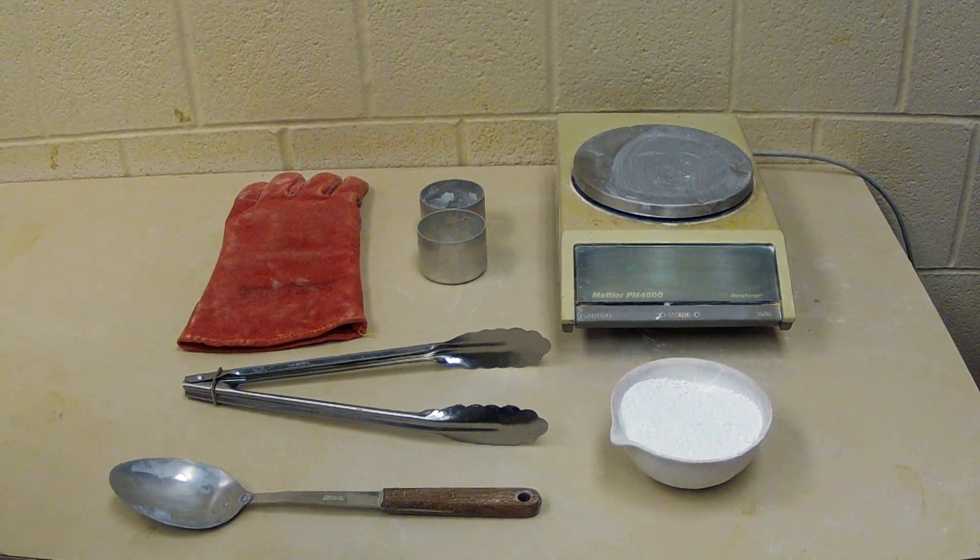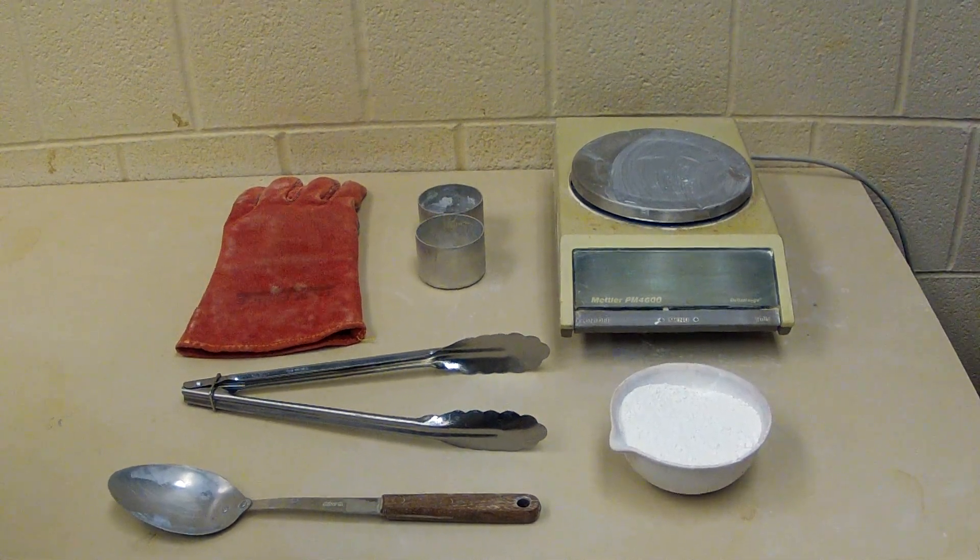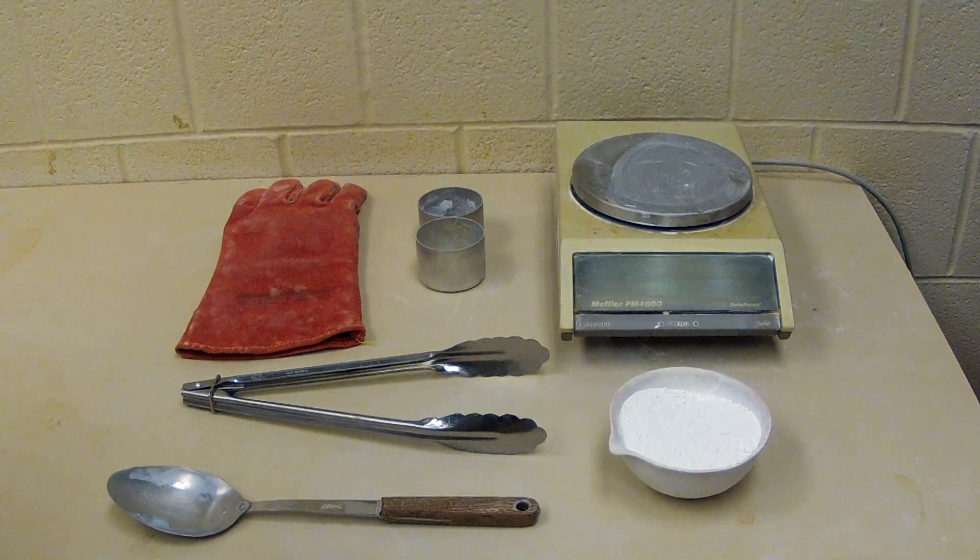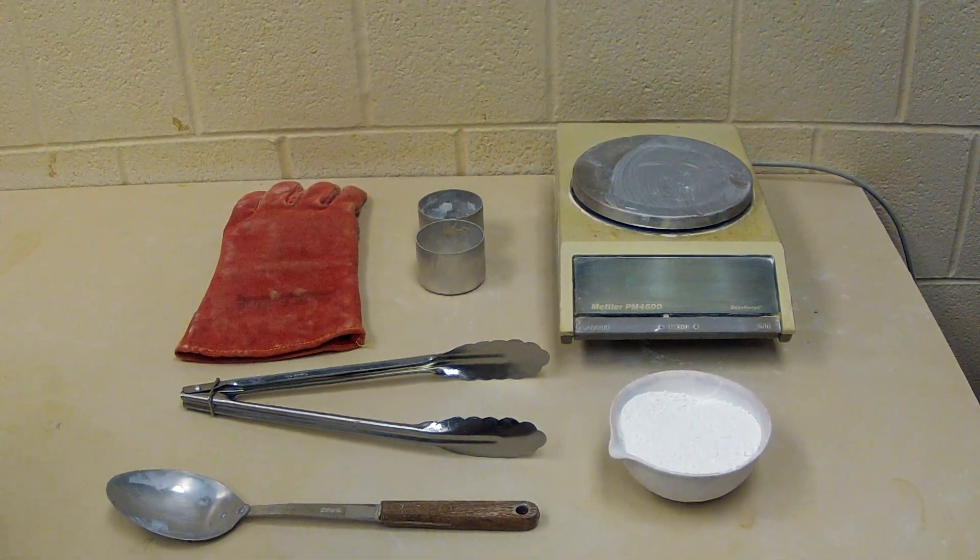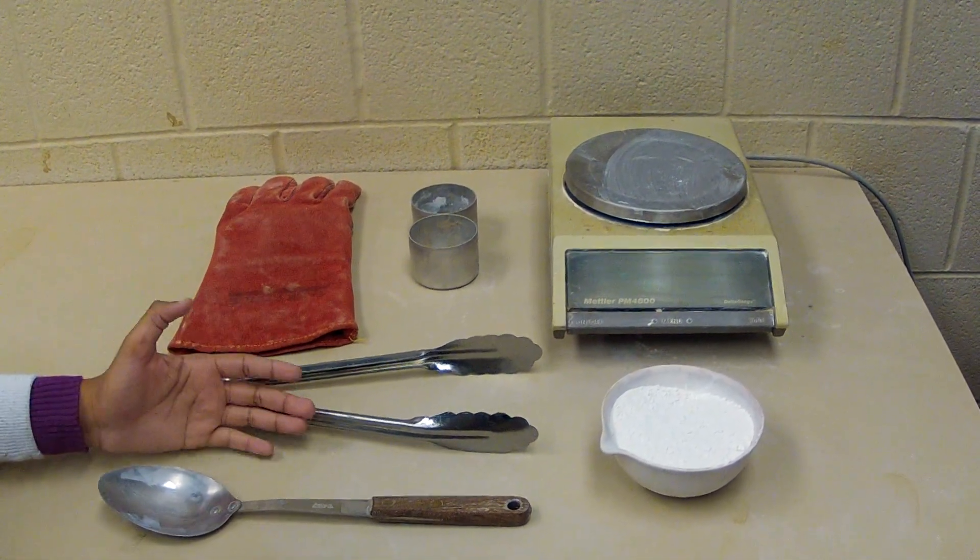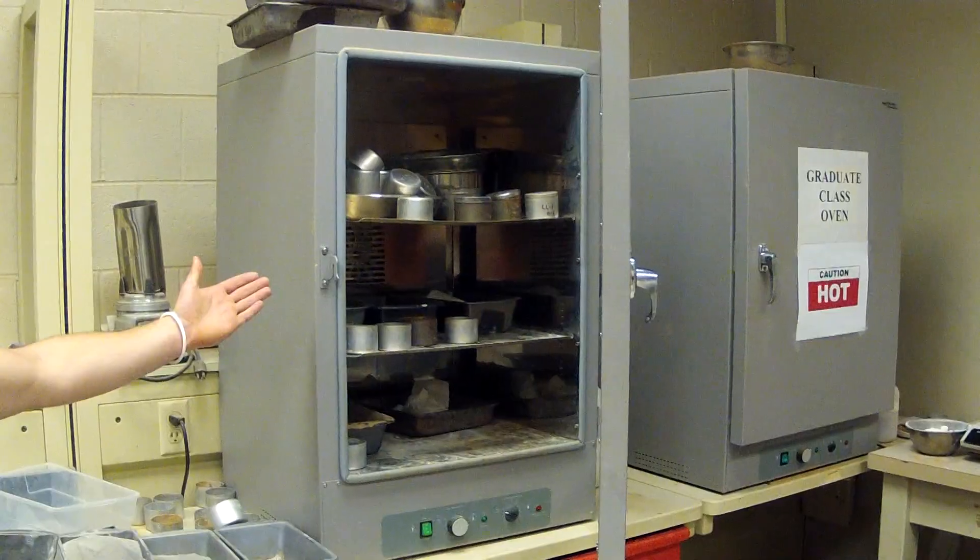Necessary equipment for the laboratory procedure are as follows: a balance to the 0.01 gram readability, soil specimen containers, an oven glove, oven tongs, a spoon for the soil, our soil specimen, as well as an oven.